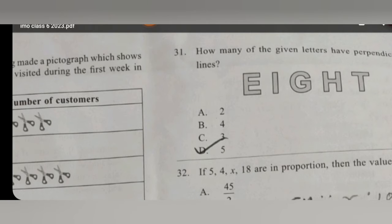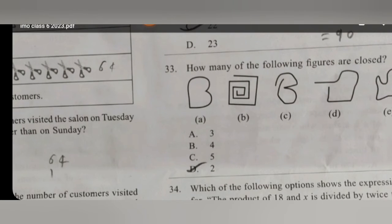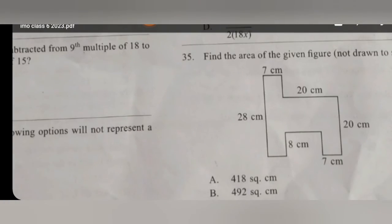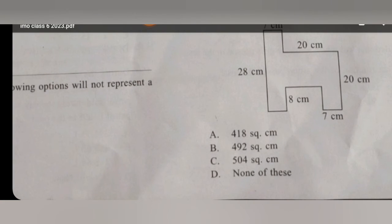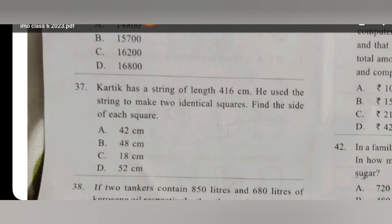Question number 30, the option is D. For question 31, option is D. Question number 32, option is A. For question 33, option D. For question number 34, option is B.